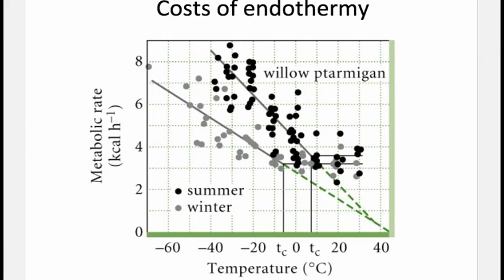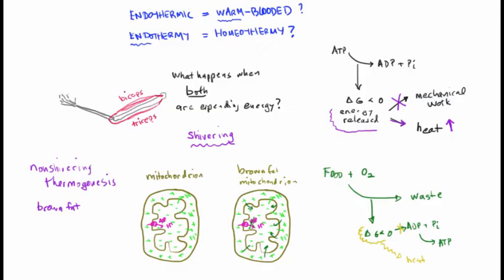Maintaining endothermy comes at substantial energetic cost. Birds under colder temperatures are throwing lots of calories toward the maintenance of body temperature, and those calories have to come from somewhere — these birds have to eat a lot of food to compensate.